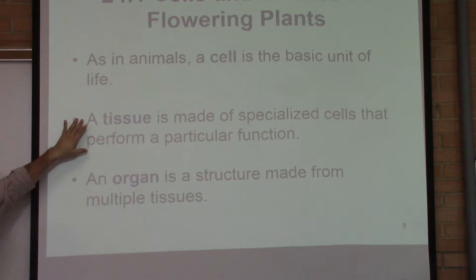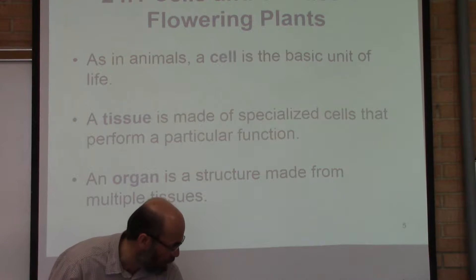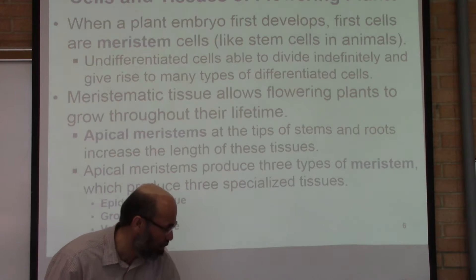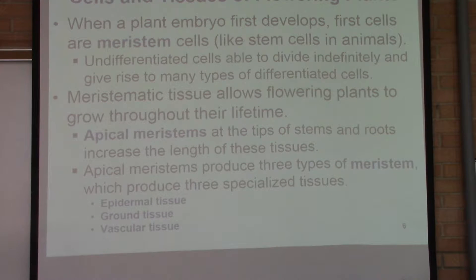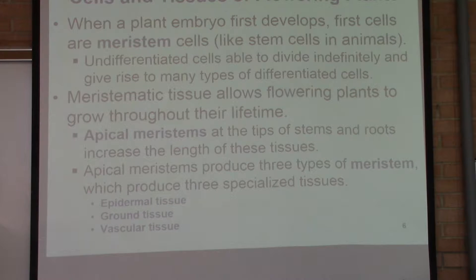Tissues are what we'll be talking about in this chapter — different types like leaf tissue, vascular tissue, and ground tissue. Plants grow from structures very similar to stem cells. These are the very first cells that arise from the embryo, and those are called meristematic cells.